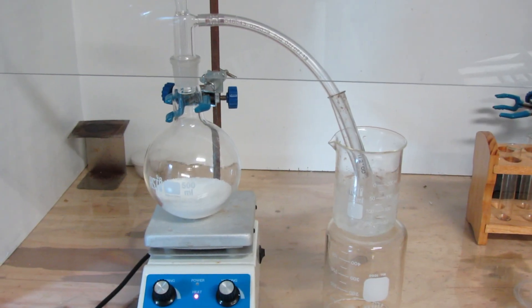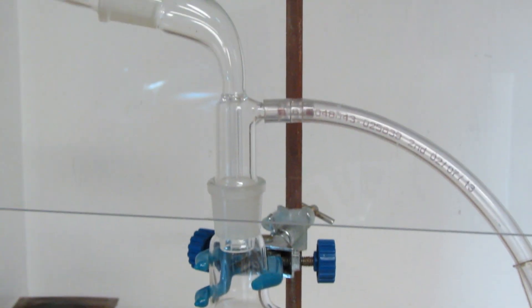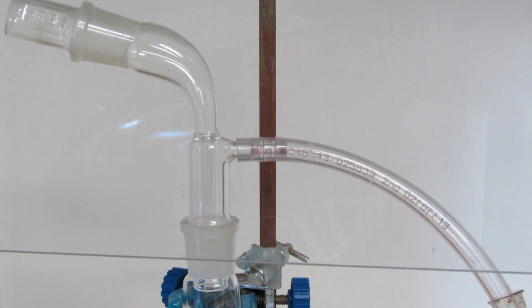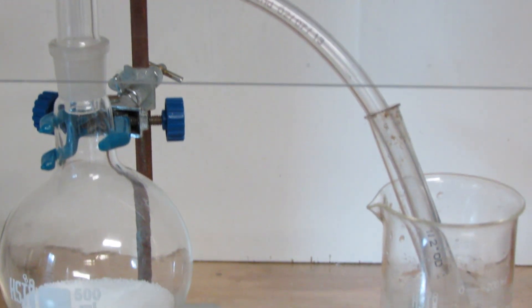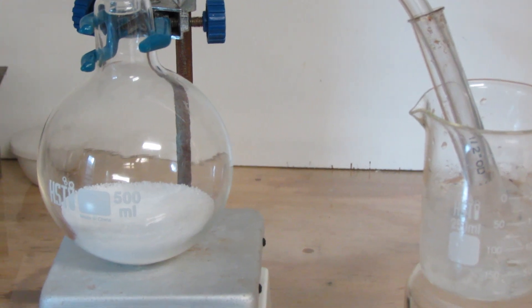Now assemble a simple gas generator setup. I just attached a vacuum receiver to the top of the flask and stopper it. This way I can attach a hose to the little hose barb, and now I can bubble the gas produced through the water in the test tube.